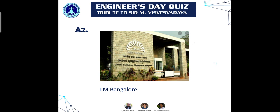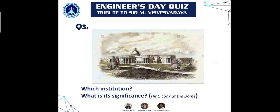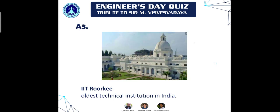Moving on to question number three: which institution is this, and what is its significance? Hint — look at the dome! Since we are talking about an engineering quiz, it should be easier to guess. This is IIT Kharagpur, and it holds the distinction of being the oldest technical institution of India. Full points for that!